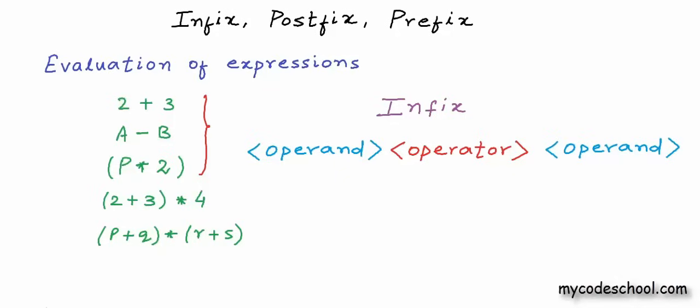While evaluating expressions with multiple operators, operations will have to be performed in a certain order. In the fourth example, we first perform the addition and then the multiplication. In the fifth expression, we first perform the two additions and then the multiplication. Throughout this lesson we are going to talk only about binary operators — an operator that requires exactly two operands. We can have operators that require one or more than two operands, but we focus only on binary operators here.